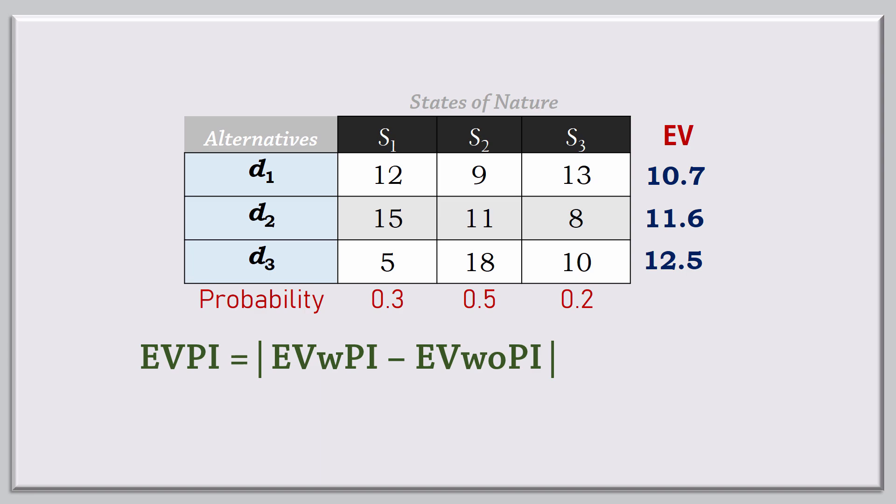The best expected value obtained earlier, that is 10.7, is the expected value without perfect information.